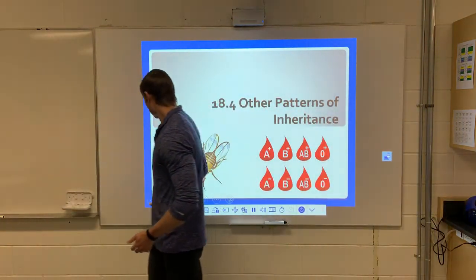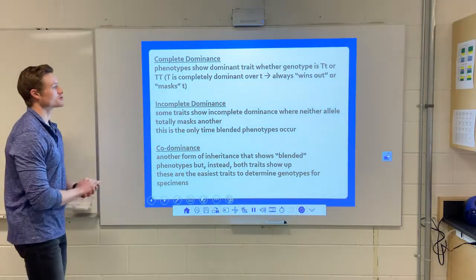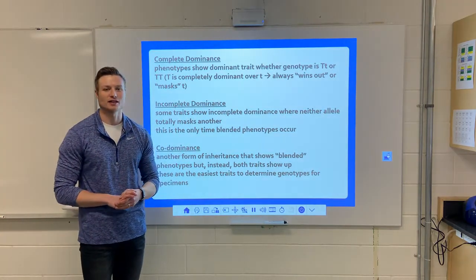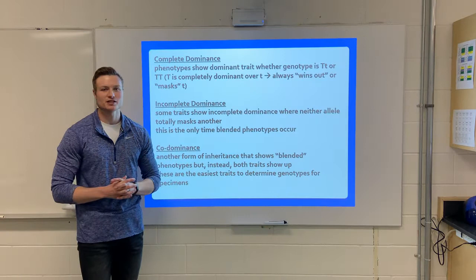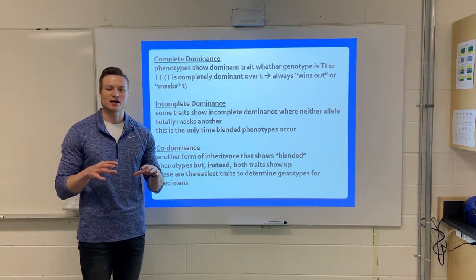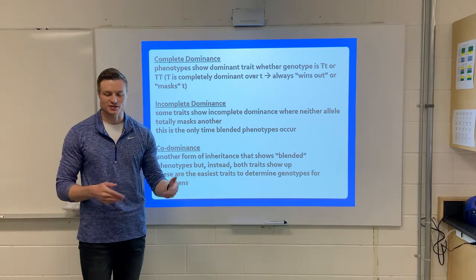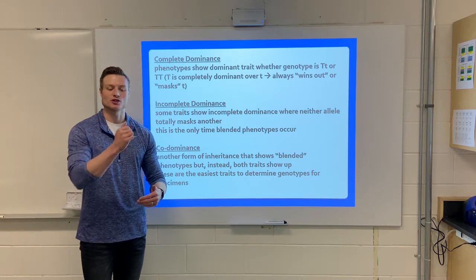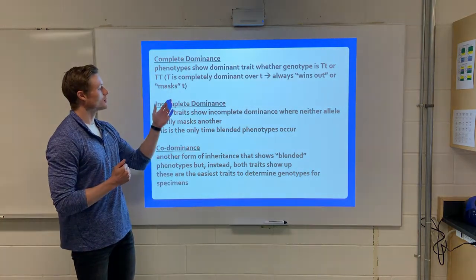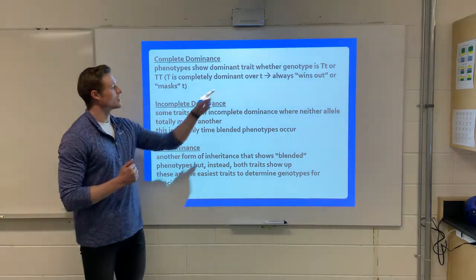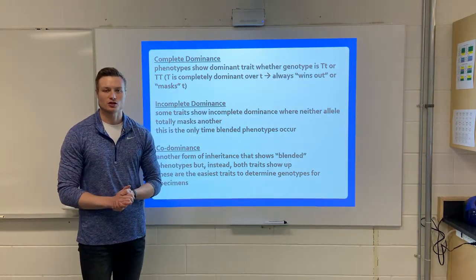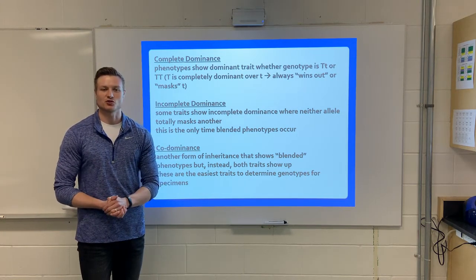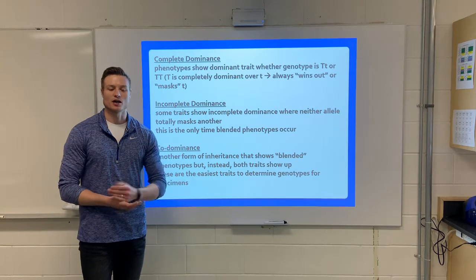Quick recap from our last lesson: complete dominance is where one genotype — let's look at the hybrid genotype big T, little t. This genotype has two differing alleles, one dominant and one recessive. In this case, the dominant allele will show through, giving you the dominant phenotype. So if tall was the dominant phenotype, a hybrid individual would be tall, a homozygous dominant individual would also be tall, and the only way to get a recessive short individual would be homozygous recessive.